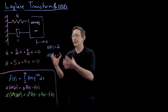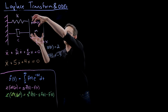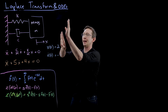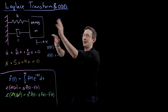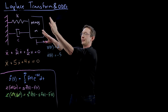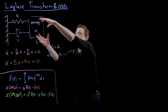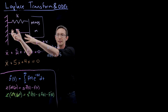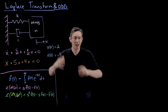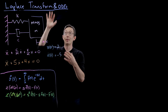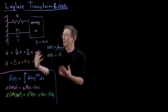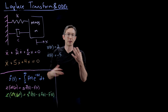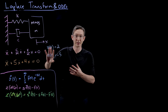X(0) equals 2 means I pull the mass two units in the positive direction. X-dot(0) equals minus 5 means I start it with an initial velocity, kicking it in the negative direction with speed 5. So I pull it over and kick it — that's the initial condition that starts this thing oscillating. Those of you who know ordinary differential equations know that the eigenvalues of this system will determine how it responds to this initial condition.